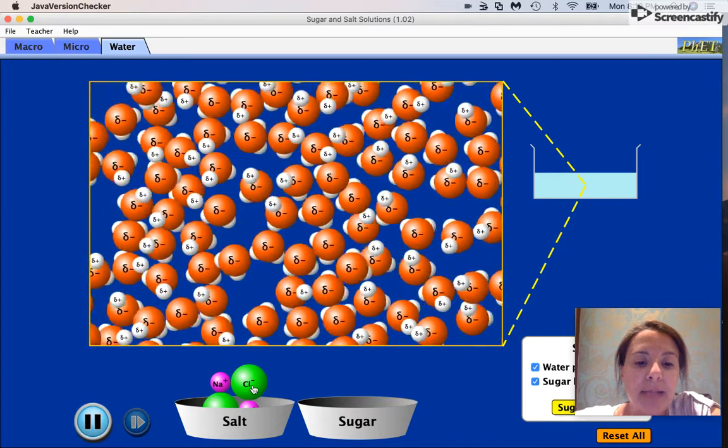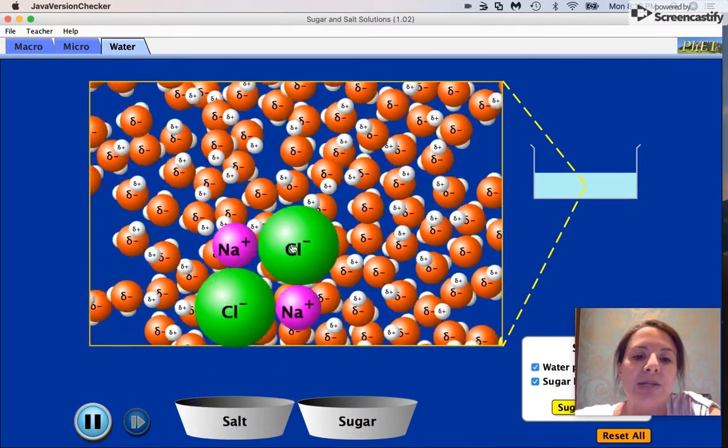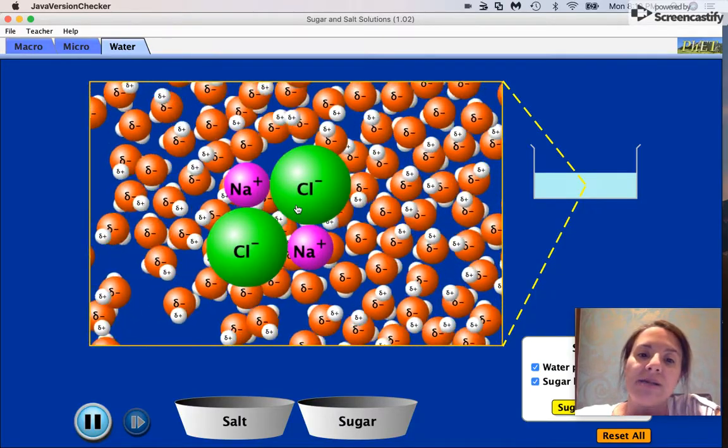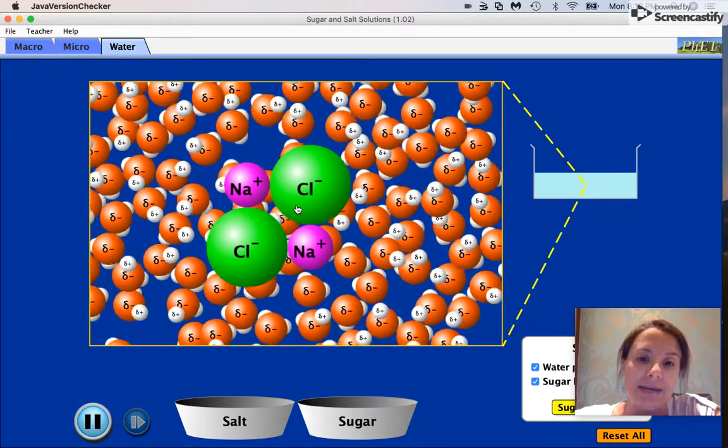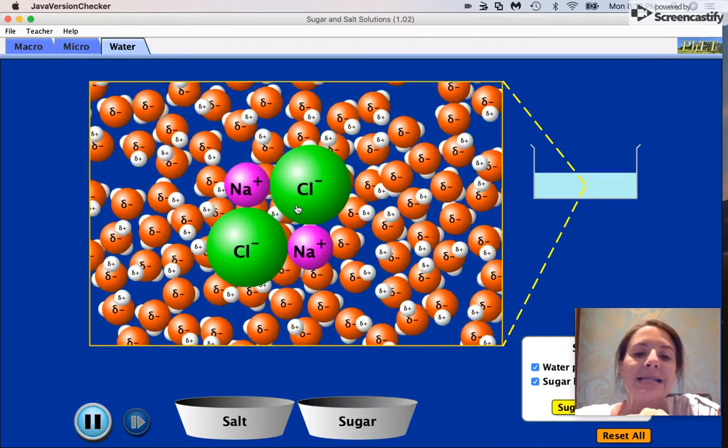So when I place table salt, the crystal lattice of sodium chloride, into the water, we're going to notice that the partial positive hydrogen atoms are going to be attracted to the negative chlorine. So watch for that.